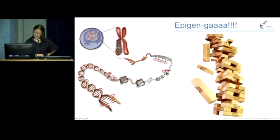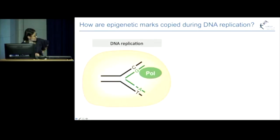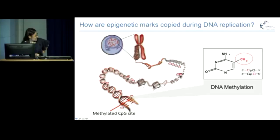So how are these epigenetic marks copied during cell division or during DNA replication? Today I'm specifically going to give you the example of DNA methylation. As a reminder, DNA methylation is when you have a cytosine — shown here in black — attached to a methyl group shown here in red, and that often occurs at CpG nucleotides in the DNA code.